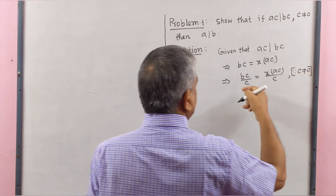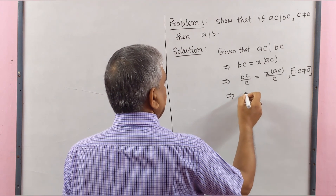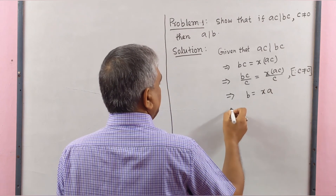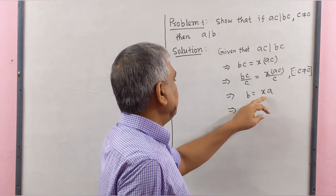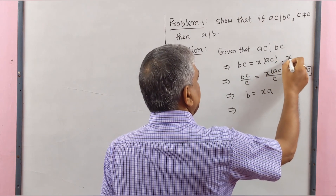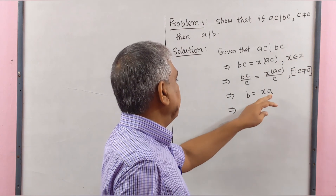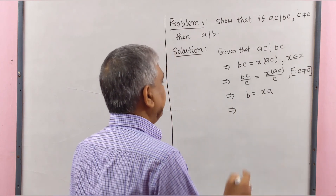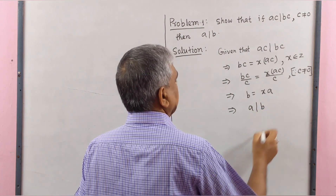So we may divide both sides by C. This implies that B equals XA, where X is an integer. Therefore, A multiplied by an integer equals B, which implies that A divides B. Proved.